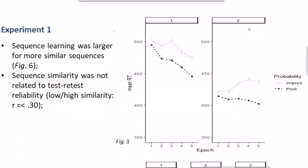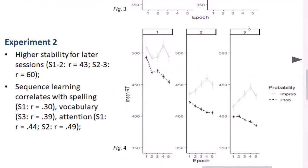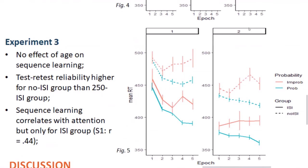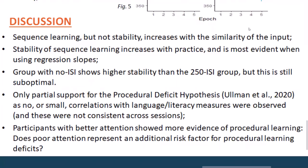Study 1 showed that stability remained low regardless of sequence similarity between the two sessions. However, Study 2 and 3 were revealing on factors that affect stability. Study 2 revealed that stability increases with the number of sessions that participants complete, while Study 3 showed that a task design feature, namely the interstimulus interval, also affects stability. Using an interstimulus interval between trials led to lower stability than having no interstimulus interval.